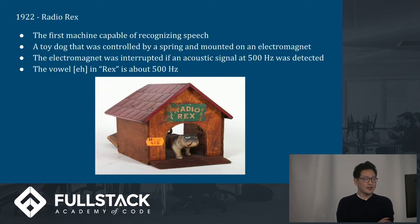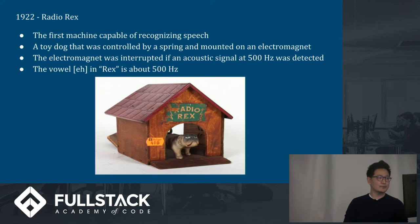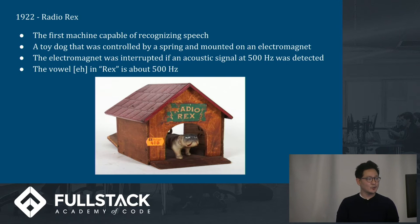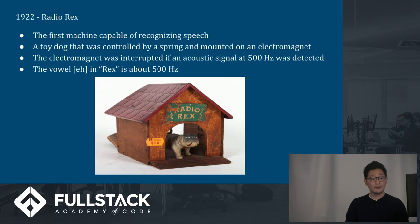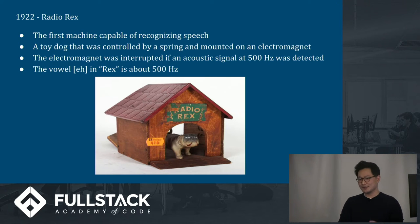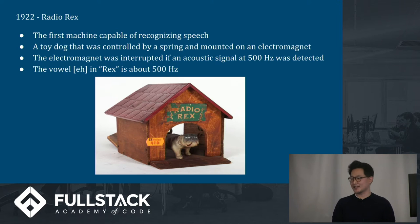Then in 1922 we get Radio Rex, the first machine capable of recognizing speech. It's a toy dog controlled by a spring and mounted on an electromagnet. The electromagnet was interrupted by an acoustic signal of 500 hertz, so if you said the word Rex, the dog would pop out — the 'eh' in Rex being around 500 hertz.